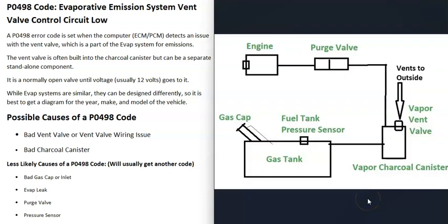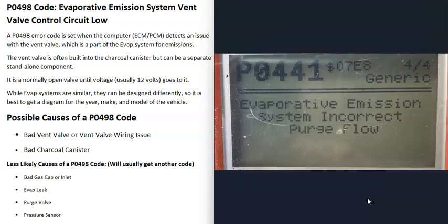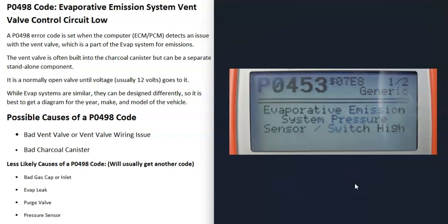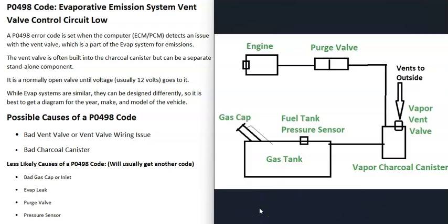It's also possible that some other issue in the EVAP system is causing the vent valve not to work correctly — things like a bad gas cap, a leaky hose, a bad purge valve, or a bad pressure sensor. Usually if that happens you're going to get another code. For example, if you also got a P0441 evaporative emission system incorrect purge flow, check the purge valve. If you got a P0453 evaporative emission system pressure sensor high, go test that pressure sensor.